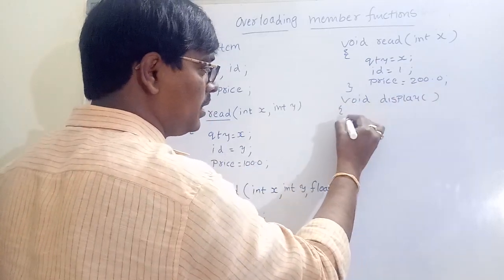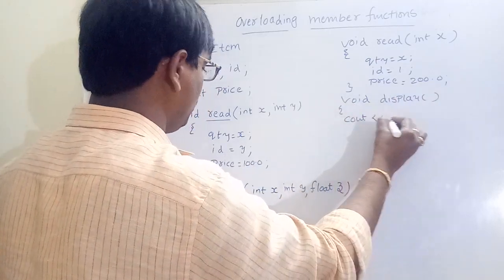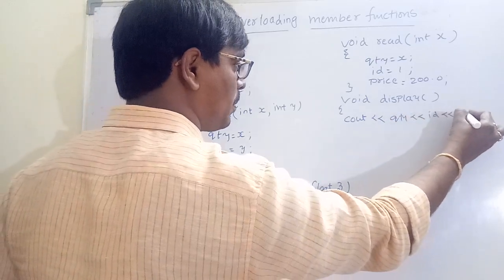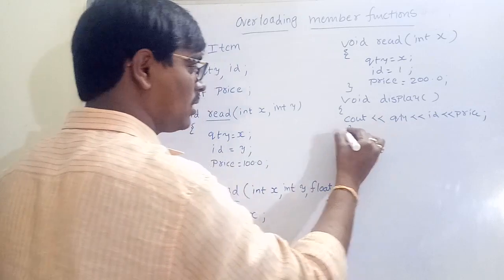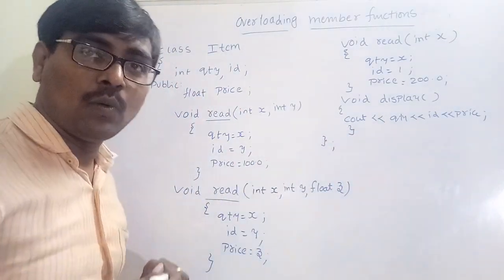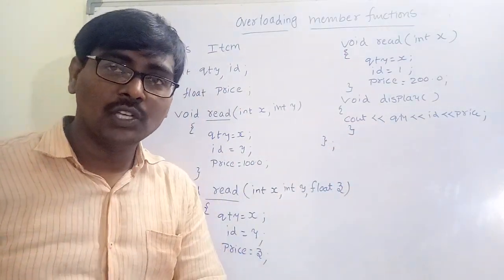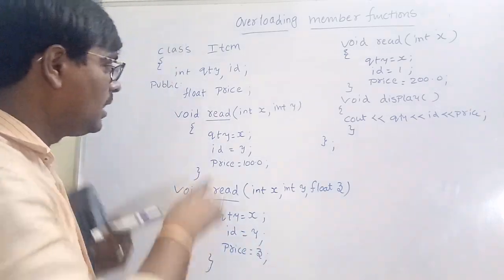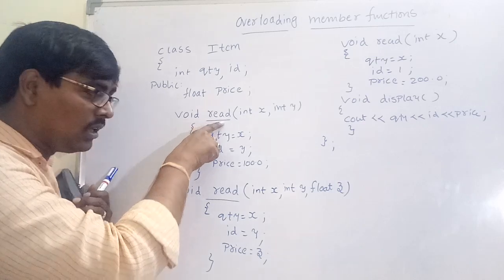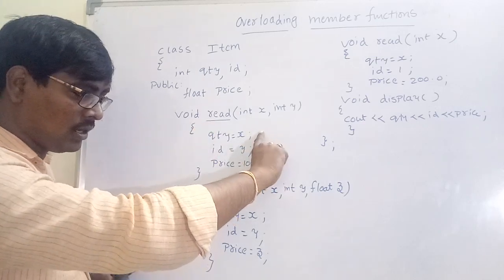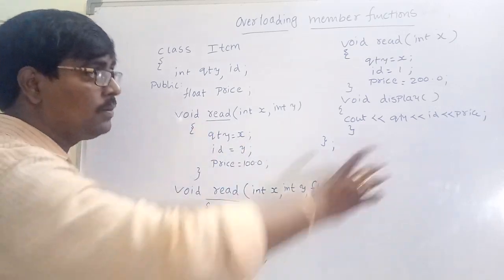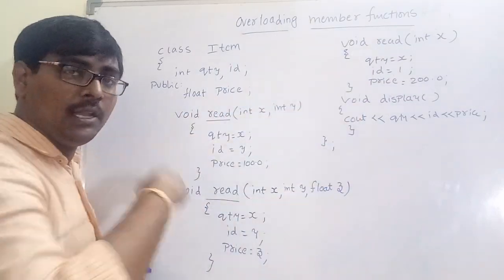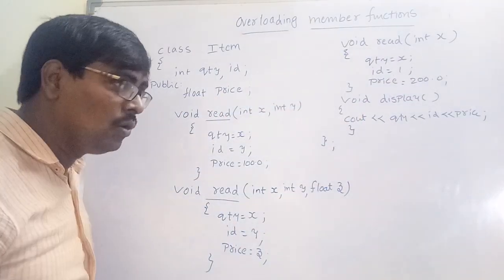In the third `read(int x)`, quantity equals x, id equals some default value, and price equals 200.0. A `display` function simply outputs quantity, id, and price using cout. Observe: the name of the function `read` is the same with multiple definitions — this is overloading.